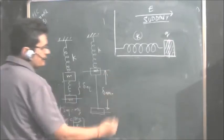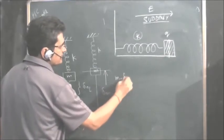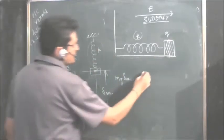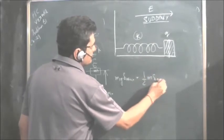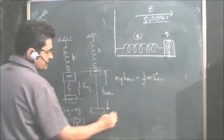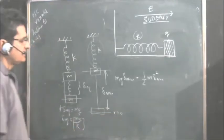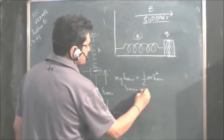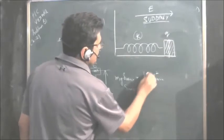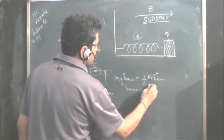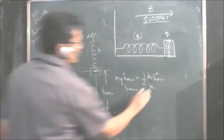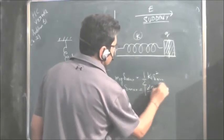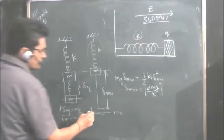Suppose it falls through Delta maximum. The fall in gravitational potential energy is Mg times Delta maximum, and the gain in spring potential energy is half K Delta maximum squared. At the extreme position, velocity is zero so kinetic energy is not included. Solving this gives Delta maximum equal to 2Mg upon K.